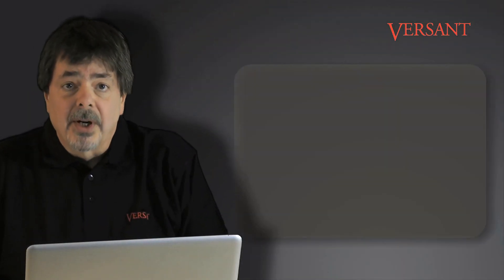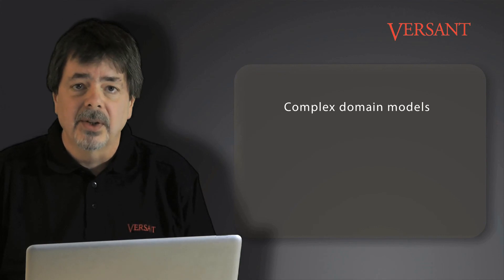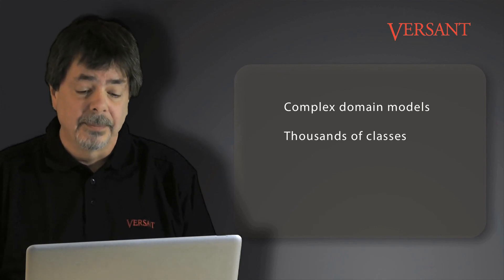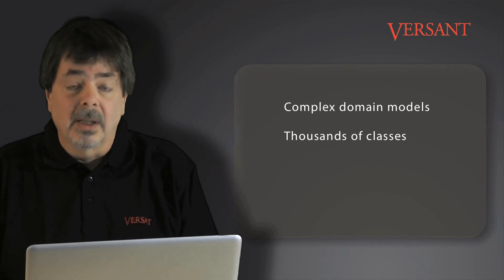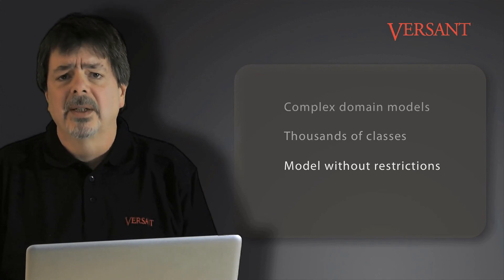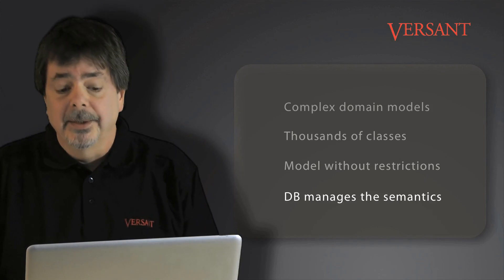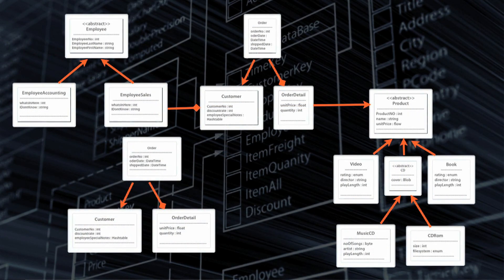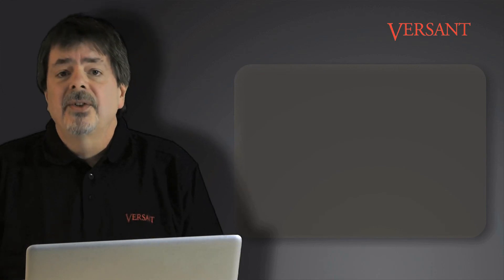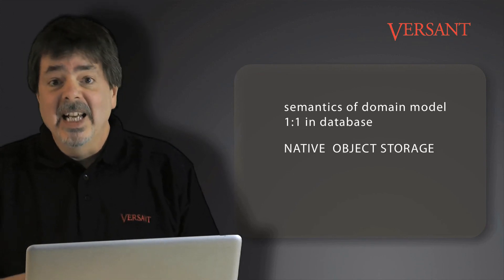Today's applications are smarter, meaning a more complex domain model. Some telco management systems using Versant Database Engine have more than 4,000 domain classes. Versant Database Engine is designed to be a logical extension of your OO development — you can model your objects without restrictions and go with your ideas without worrying about database design. Your domain objects are managed in the database in the very same way they are designed. The Versant Database Engine maintains a database schema that exactly represents your object design and will automatically evolve with your application. We call that native object storage.